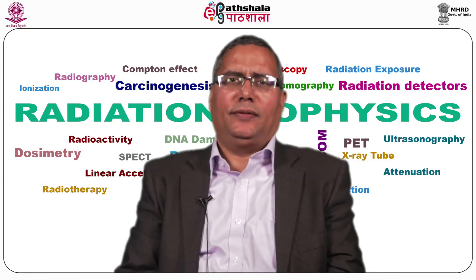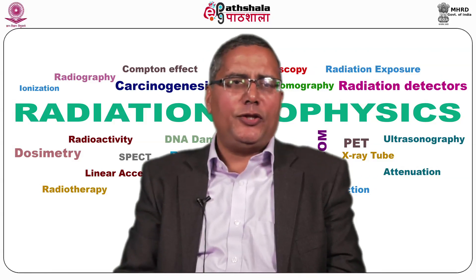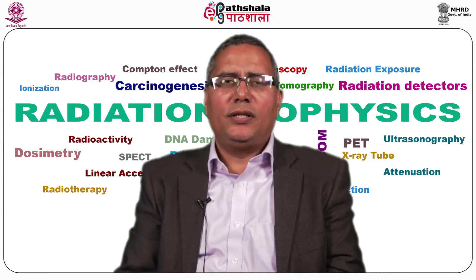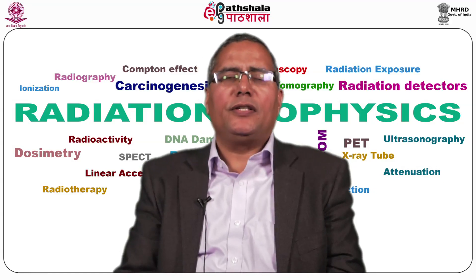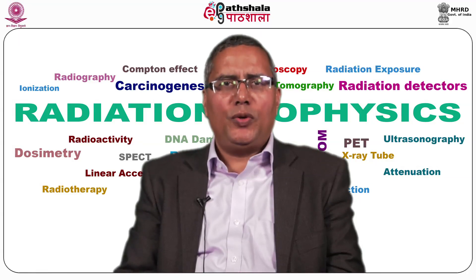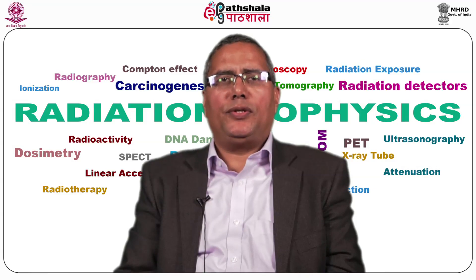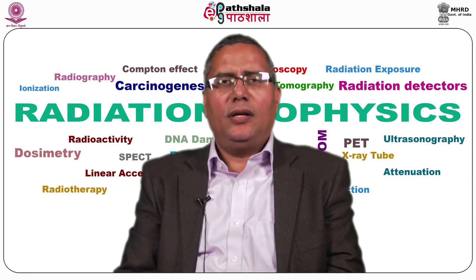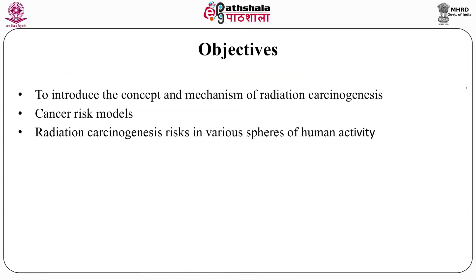Similarly, there are many unknown areas where radiation exposure takes place. For example, you might be hearing about mobile radiation, but we would not be talking about that here because it does not fall in the category of ionizing radiation. Today we are strictly dealing with radiation carcinogenesis due to ionizing radiation — which is X-rays, gamma rays, and even at the lower end, ultraviolet rays. So the objectives, once again: to introduce the concept and mechanism of radiation carcinogenesis, learn various cancer risk models, and discuss radiation carcinogenesis risk in various spheres of human activity.